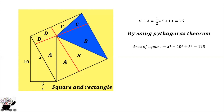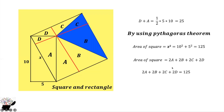So S² = 10² + 5² = 100 + 25 = 125. This means 2A + 2B + 2C + 2D, which is the total area of the square, equals 125. We can factor out 2, giving us 2(A + B + C + D) = 125, so A + B + C + D = 125/2.